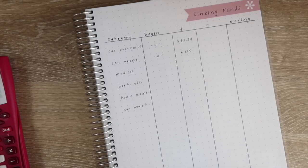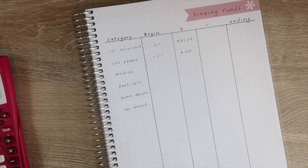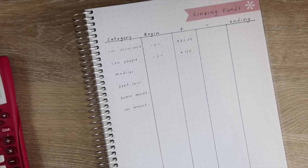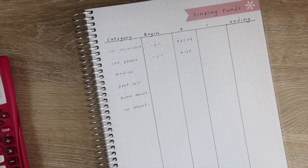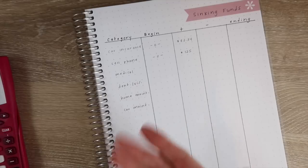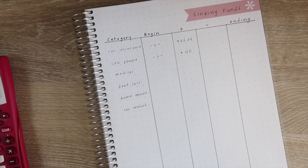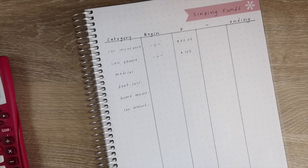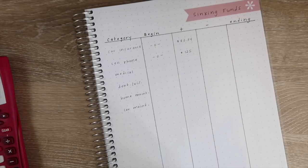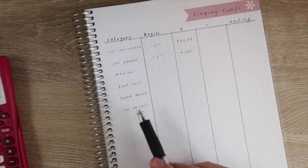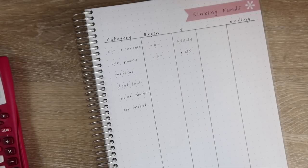What you decide to put in sinking funds really just depends on your family, but for us I like to put things that I know either the amount and the timing. So car insurance, you know it's going to be due every six months. You know that it's going to be around what you paid last time. You know that your cell phone bill is going to be due. You know that every year there's an out-of-pocket that you might have to pay for medical. I would also love to add sinking funds for clothing. You know that you're going to have to make home repairs. You know that your car is going to need maintenance.